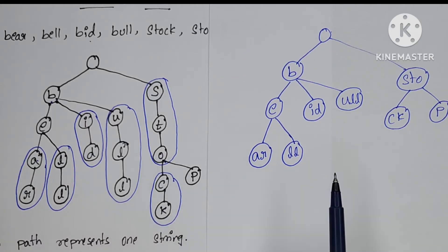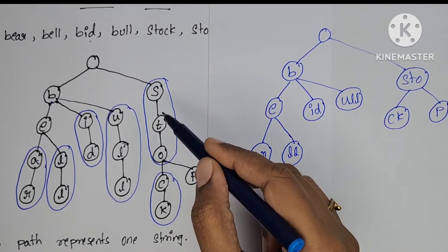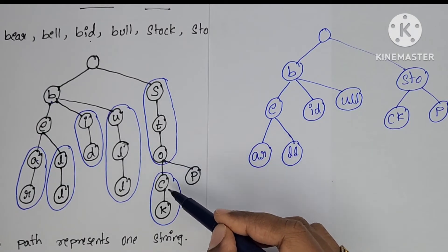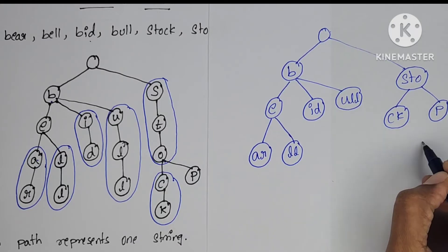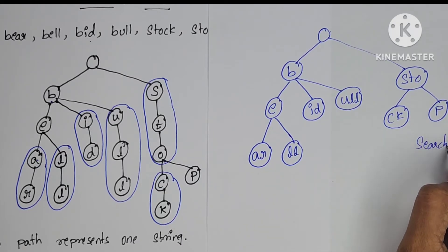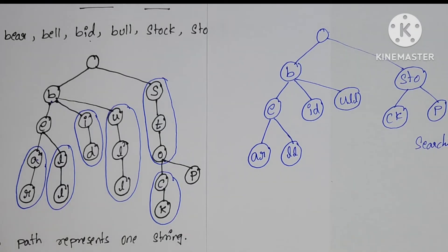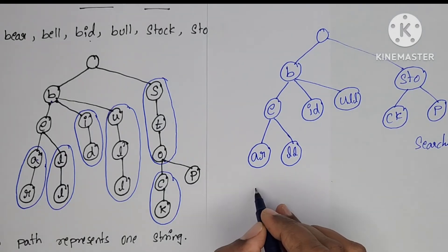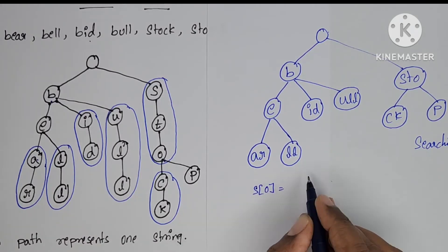To search 'stock' in a standard trie, you compare all five characters one by one. But in a compressed trie, S-T-O is in one node and C-K is in another node, so searching is easier. This is the basic difference between a standard trie and a compressed trie.